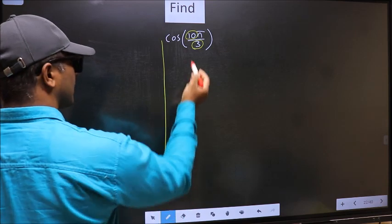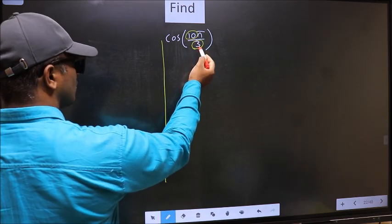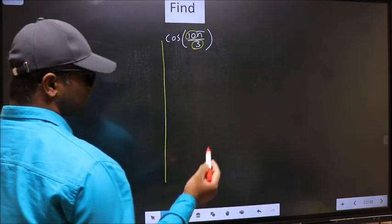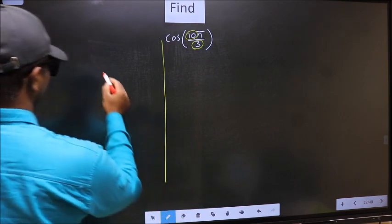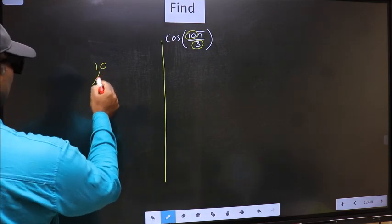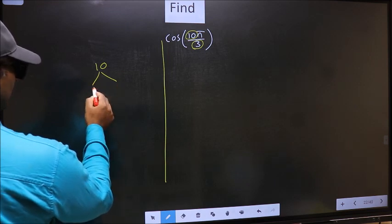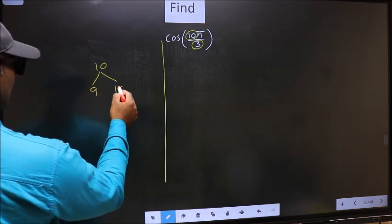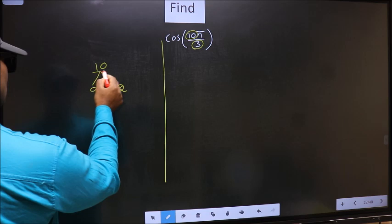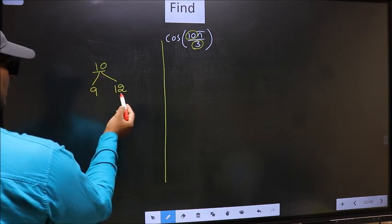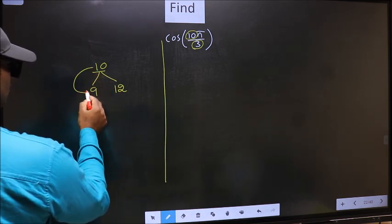Now you should check 10 is close to which multiple of 3. And here you write multiples of 3, that is 9 and 12. So now 10 is close to which number? This is close to 9.